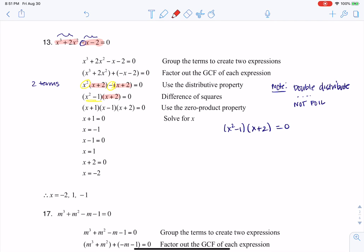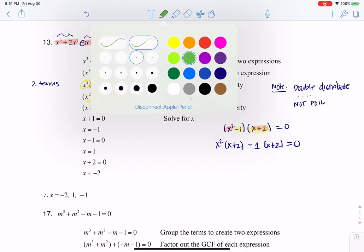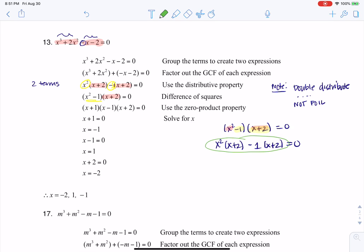So when I say double distribute, I'm going to take the x squared, and I'm going to multiply it to x plus 2. So I would have x squared times x plus 2. And then I want to distribute the next term. So I'm going to send the minus 1 to the x plus 2. So I would have minus 1 times x plus 2 is equal to 0. And if you take a look, let me change colors.